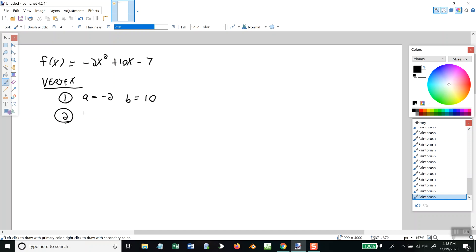Step two, plug those into -B/2A and simplify. So, I'm going to have a negative, and we said B was 10. And then 2 times A, which is -2. That gives me -10 over 2 times -2 is -4. Now, negative divided by negative is positive, so that's 10/4. And that reduces, the top and bottom of both of those by 2, it gives me 5/2.